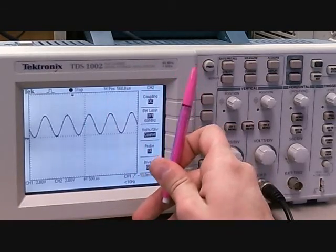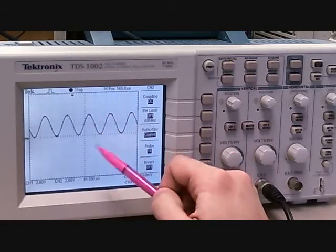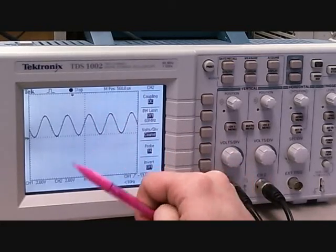This pretty much summarizes how to get the expected results on the oscilloscope from the digital multimeter.